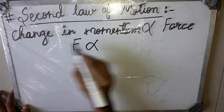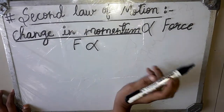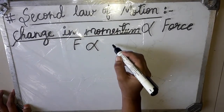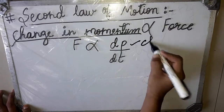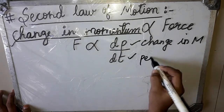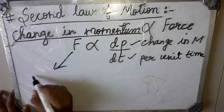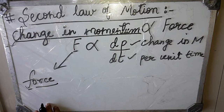Force is directly proportional to change in momentum. Momentum means the product of mass of a body and velocity of a body. The change in momentum per unit time — dp upon dt — where dp is change in momentum with respect to time, and F is the unbalanced force. Statement: the change in momentum of a body per unit time is directly proportional to the unbalanced force acting on the body.